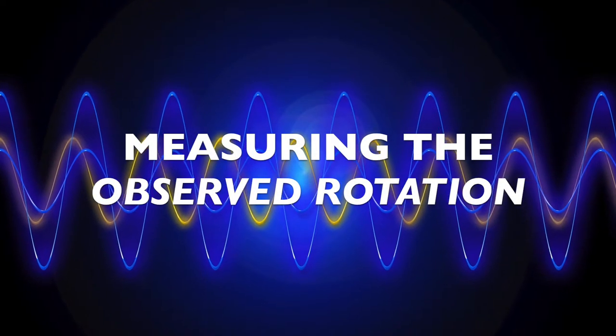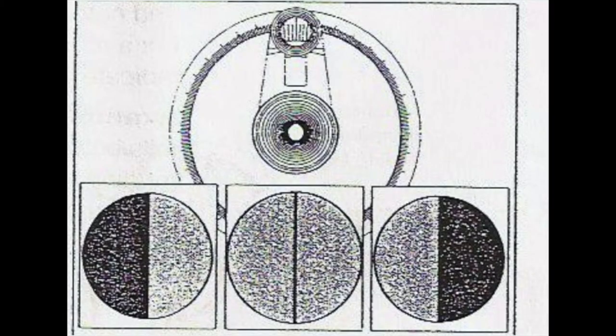Now to measure the observed rotation of a sample using the polarimeter. Looking through the eyepiece, when the scale is set to zero, one side of the field of light should be darker than the other.